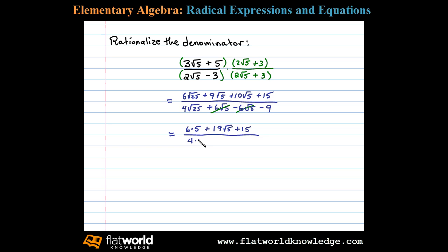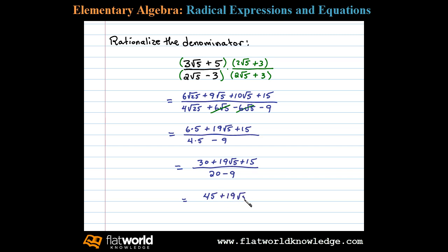In the denominator I have 4 times the square root of 25, or 4 times 5, and then minus 9. Notice in the denominator we no longer have radicals. So 6 times 5 is 30, and we're left with 30 plus 19 square root of 5 plus 15 in the numerator. In the denominator we have 20 minus 9. Continuing, 30 plus 15 gives us 45 plus 19 square root of 5, and 20 minus 9 is 11.